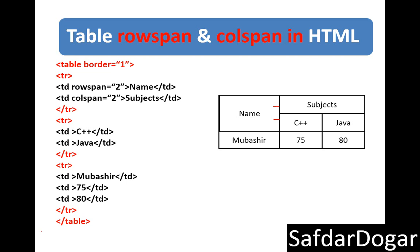So this is how you can use rowspan and colspan. This means that you have a row and you can divide it into two rows, or you can divide a subject into one or two columns and add the subject to those columns.